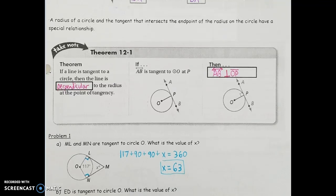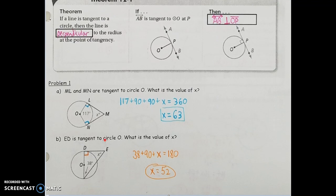The same type of question applies next, this time dealing with a triangle. ED is a tangent line to circle O, tangent at point D, and we want to find the value of X. We're given a 38-degree angle in the triangle, and since the radius and tangent line are perpendicular, we have a right angle at D. For a triangle, the angles add to 180, so 38 plus 90 plus X equals 180, leaving us with 52 degrees for X.